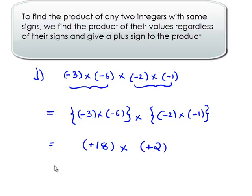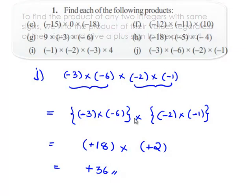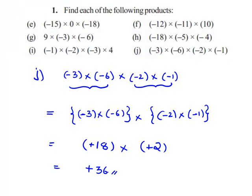Now we have to find plus 18 into plus 2. It gives plus 36. Therefore, negative 3 into negative 6 multiplied by negative 2 multiplied by negative 1 gives plus 36.